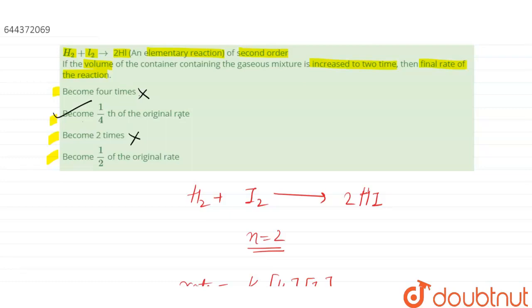Becomes 2 times? No. Becomes half of the original rate? No. So option number 2 is the correct answer. That is, the final rate of the reaction becomes 1/4th of the original rate.